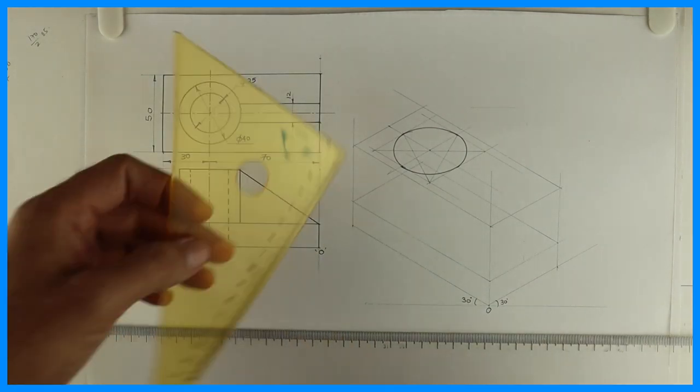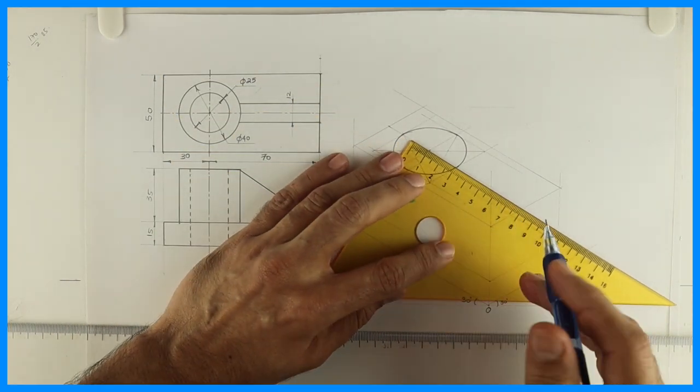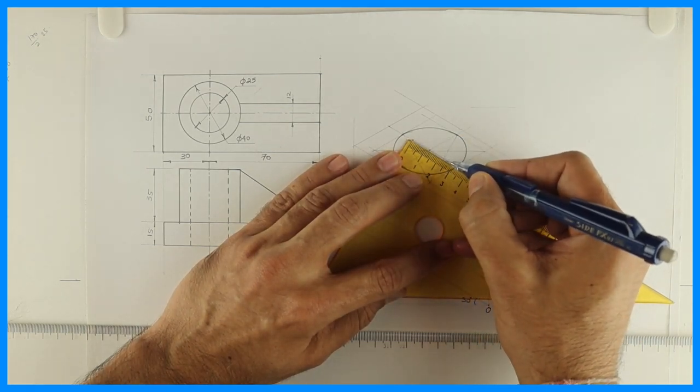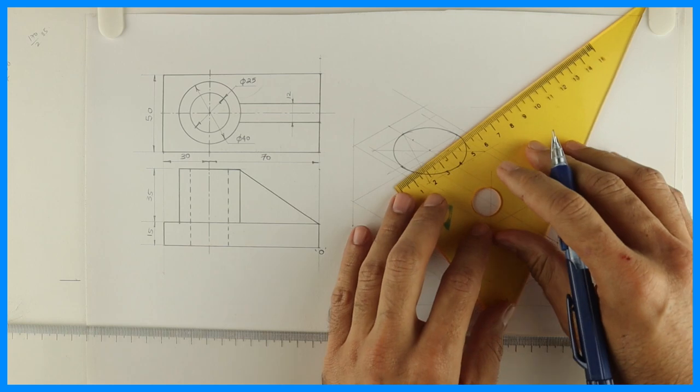Now if you see diameter 25. So again we will draw one more rhombus with the same method. We'll take 12.5, 12.5 and we will follow the same procedure.